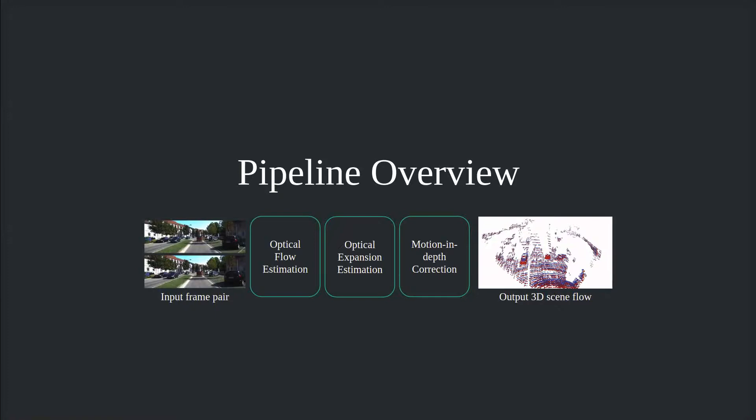We implement our approach as a multistage neural network. Given the frame pair, our method produces 3D scene flow along with several intermediate representations. First, we estimate optical flow using off-the-shelf flow network.